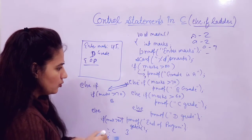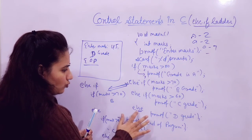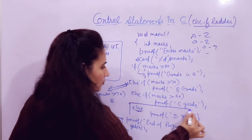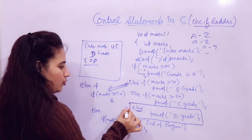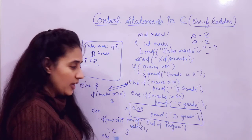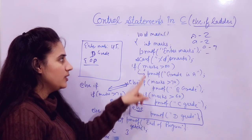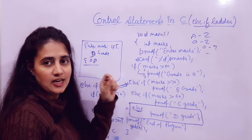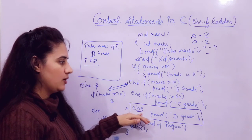See one more thing — it is not compulsory to write down this else. You can skip it. But for every else there should be an if statement. If you don't write the else statement and you enter 45, and none of the conditions is true, then finally it will print only 'end of program' — it will not print any grade. That is also fine.